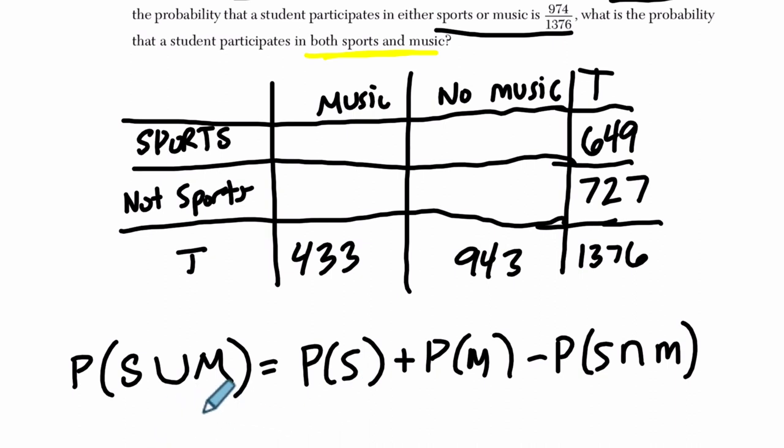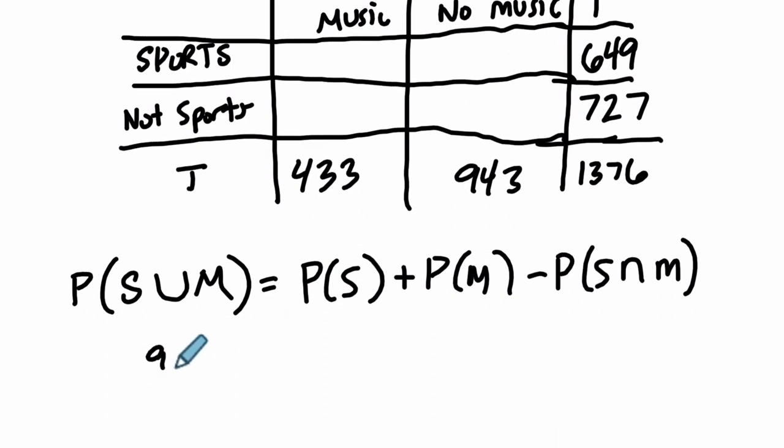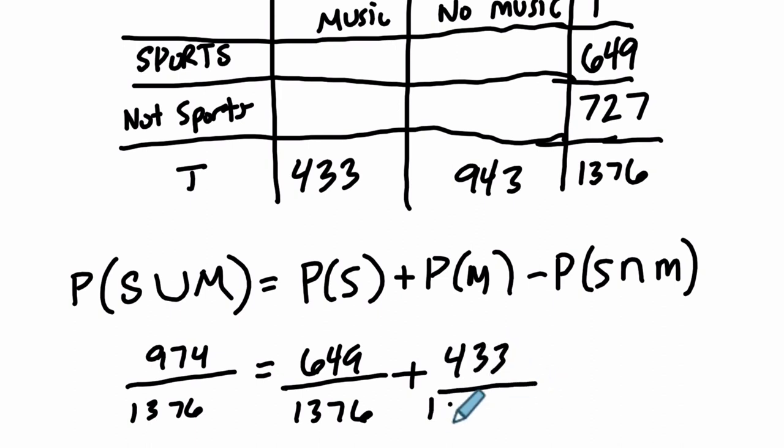Well, it would equal the probability of us playing sports plus the probability of us playing music minus the probability of us playing both sports and music. And this is the symbol for and, or the intersection. So we'll explain this in a moment. Let me just plug in some numbers here. We know the probability that they play sports or music. They gave us that number. It's 974 over 1376. The probability that they play sports, there are 649 students who play sports out of 1376 students in total, plus the probability that they play music. 433 out of 1376. And then the only thing that's missing is the probability that they play sports and music. So we'll leave that as our variable.